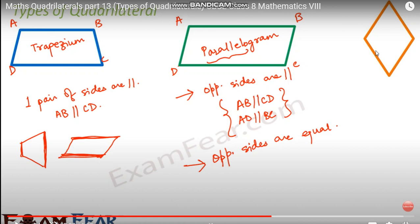Another property is the parallelogram law: the sum of squares of sides is equal to the sum of squares of the diagonals. We will discuss the parallelogram law in higher classes. A parallelogram also has rotational symmetry of order 2. Basically, with four vertices A, B, C, D, the condition for a parallelogram is that opposite sides are parallel and equal in length.